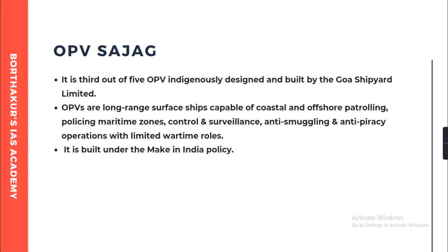The weapons and sensors are capable of carrying a twin engine helicopter along with four high speed boats. OPVs are long range surface ships mainly capable of coastal and offshore patrolling, policing the maritime zones, conducting control and surveillance activities, and are involved in anti-smuggling and anti-piracy operations with some limited wartime roles. The OPV Sajag will help manage greater responsibilities in the years to come and will strengthen the ICG's concurrent multiple operations capability, working towards ensuring safe, secure and clean seas and responding promptly to any maritime emergency in the neighborhood.